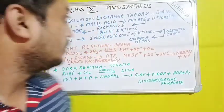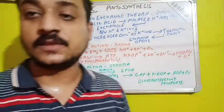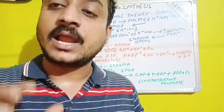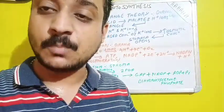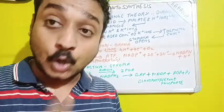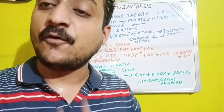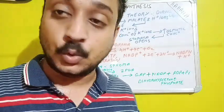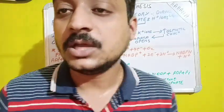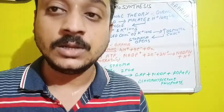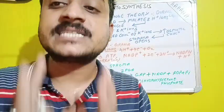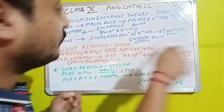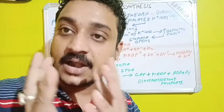Good evening to one and all. Today we will be dealing with the chapter photosynthesis. We will learn how the presence of potassium ions can control the opening and closing of stomata. Apart from that, we will also learn how the light reaction and dark reaction of photosynthesis can produce glucose. I have made a flow chart so that you can understand the concept first.